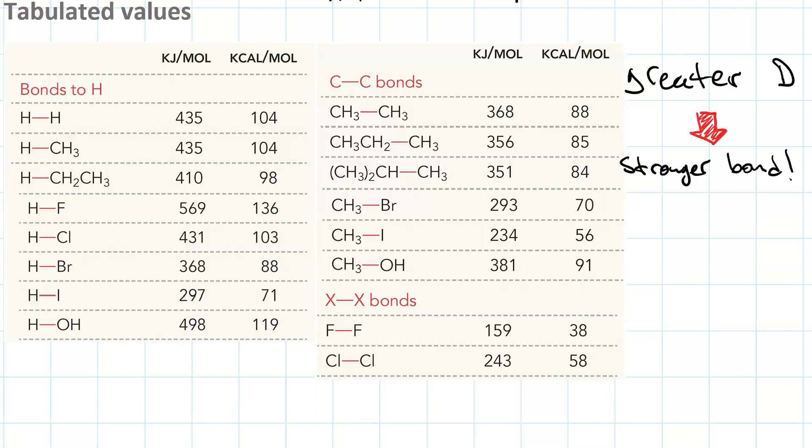The really cool thing about bond enthalpies is we can use them to estimate ΔH for a reaction using this equation. ΔH of a reaction is approximately equal to the summation of the bond enthalpies of all bonds broken, minus the summation of the enthalpies of all bonds formed.